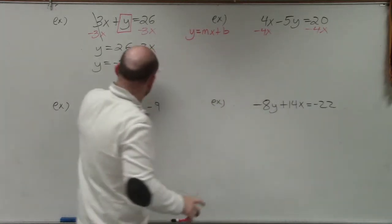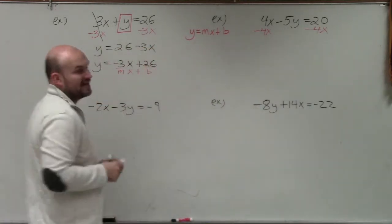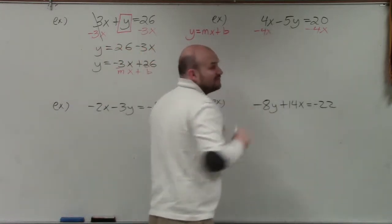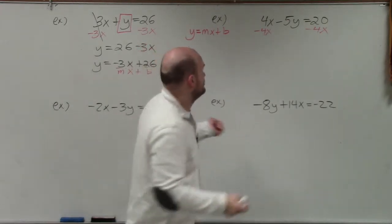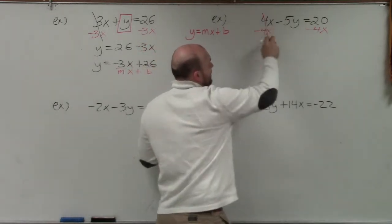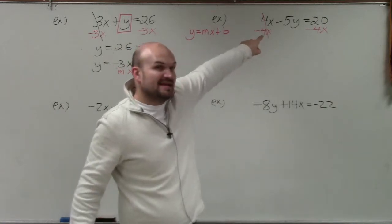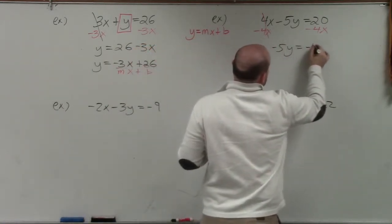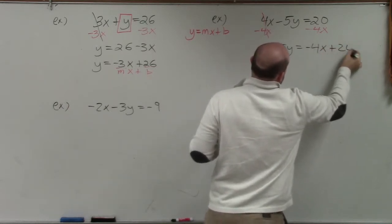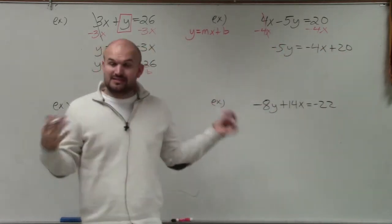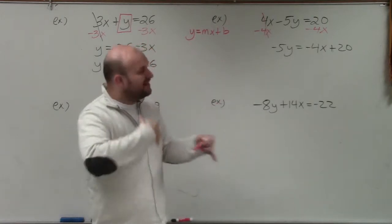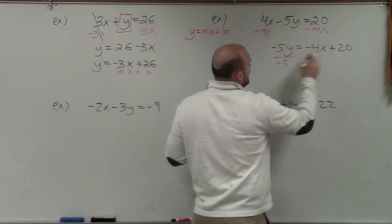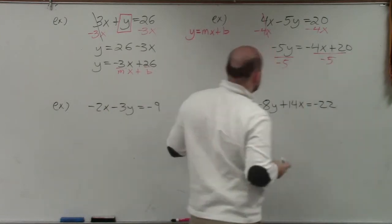So I'm going to undo subtracting by 4x. Just like we did before, we're going to want to write that negative 4x in front of the 20. Make sure you keep this negative in front of the 5. That doesn't go away. You have positive 4x subtracting 4x, that's going to go to 0, but that still keeps that negative 5y there. So I have negative 5y is equal to negative 4x plus 20. Now, to solve for my y, you can see my y is being multiplied by negative 5. I need to undo multiplying by negative 5, so I divide by negative 5. Make sure you divide by negative 5 on both sides.